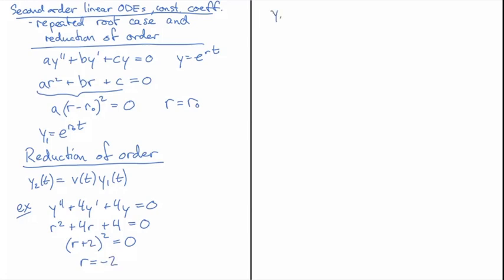So y₁ is going to be e^(-2t) and y₂ is going to be, let's put (t) just so we can make it explicit where the functions are.